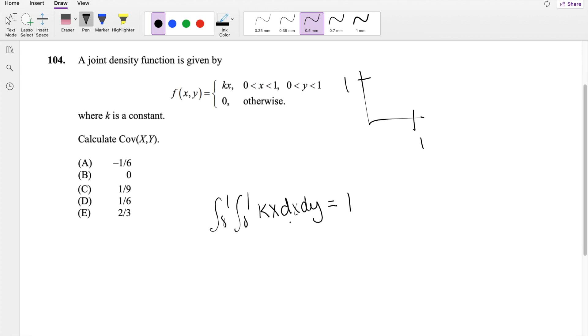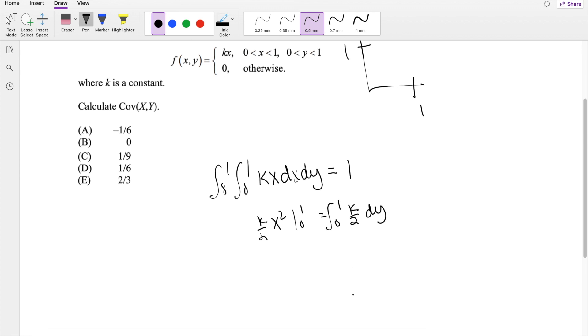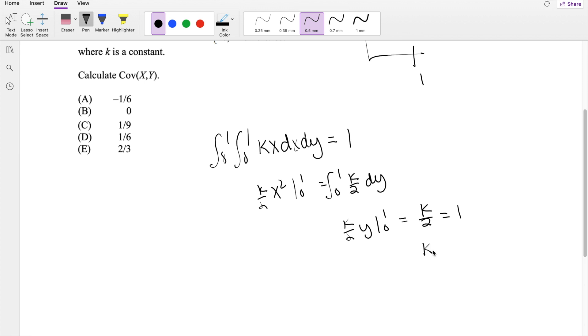Taking this integral in terms of x, you get x squared, k over 2, integrating from 0 to 1. So you get k over 2, integrating this from 0 to 1 dy. Then you get k over 2 y, integrating this from 0 to 1. So then this is equal to k over 2 is equal to 1. So then that means k must be equal to 2.